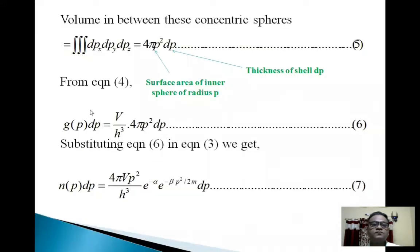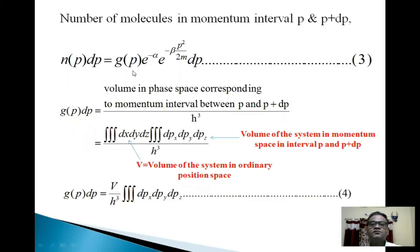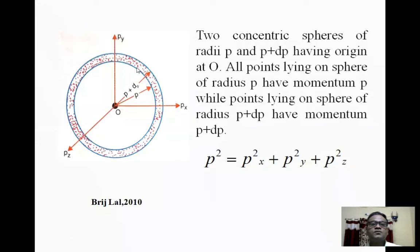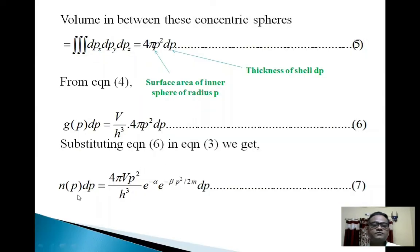So from Equation 4, G_p dp = (V / h³) * 4πp² dp. (Equation 6) We have substituted the value of this integration into Equation 4. Now substituting Equation 6 into Equation 3, we get: N_p dp = (4πV p²/ h³) * e^(−α) * e^(−β * p²/2m) dp. (Equation 7)